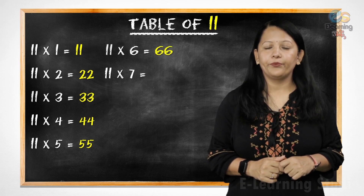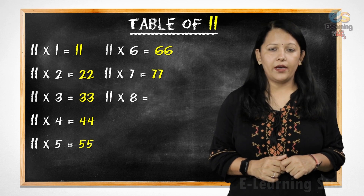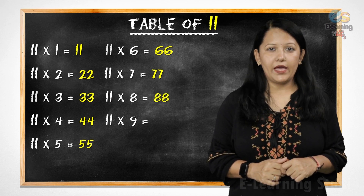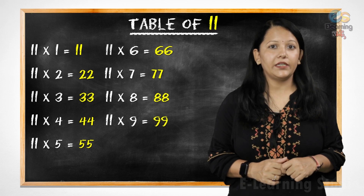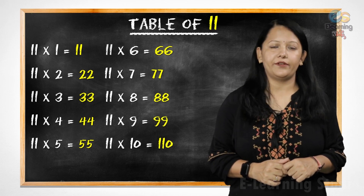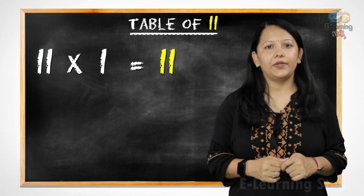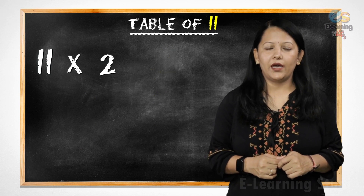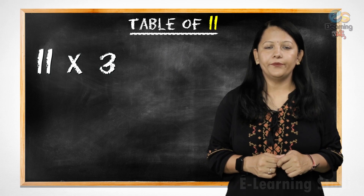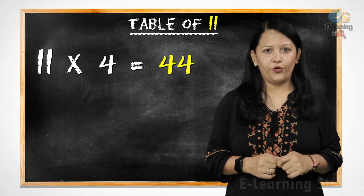11 7s are 77, 11 8s are 88, 11 9s are 99, 11 10s are 110. 11 1s are 11, 11 2s are 22, 11 3s are 33.